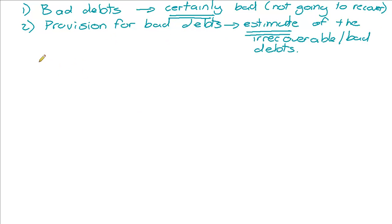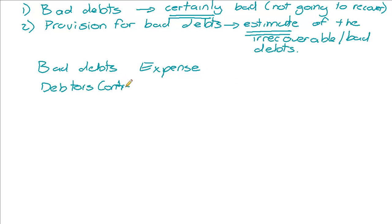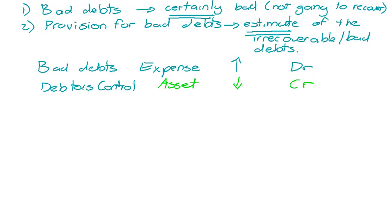In the previous video, we saw that bad debts is an expense because it is basically an asset that has been lost — the asset being debtors control. For the debit and credit of writing off a debtor's debt as bad: the bad debts expense is going to increase, which is a debit; and debtors control, an asset that is decreasing because we're losing money owed to us, is going to be a credit. So debit bad debts, credit debtors control.